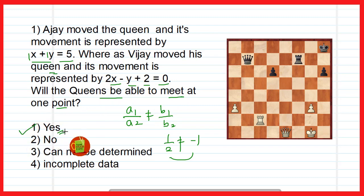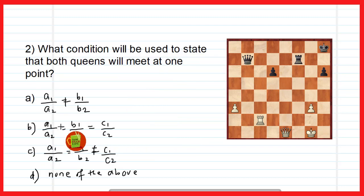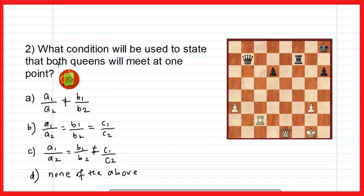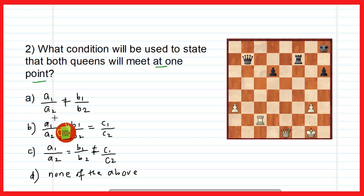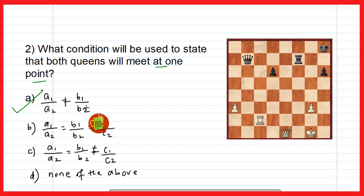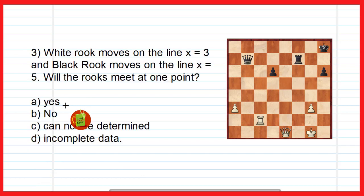Question 2: What condition is used to state that both queens will meet at one point? The condition we used is A1/A2 ≠ B1/B2. So option A is the correct option.